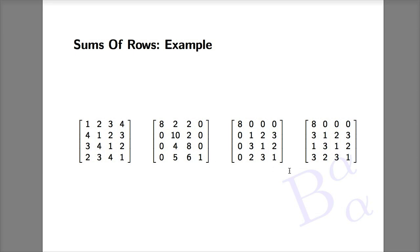Moving on to the third matrix: the first row adds up to 8 but the other three each add up to 6. Nevertheless, we can take advantage of this by multiplying the matrix by the vector [0,1,1,1]. The result is [0,6,6,6], which is 6 times the original vector. Therefore 6 is an eigenvalue and [0,1,1,1] is the corresponding eigenvector — so even in this less straightforward case we can still apply the sums of rows principle.